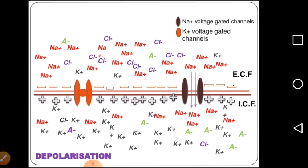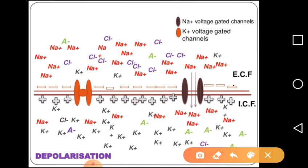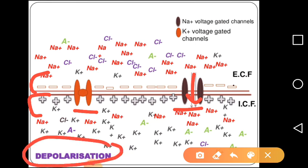Depolarization occurs when sodium channels open and potassium channels are closed. More sodium goes inside, and when more positive ions move inside the cell, it causes positivity inside the cell compared to outside. So outside the cell becomes negatively charged and inside becomes positively charged. This is called depolarization.